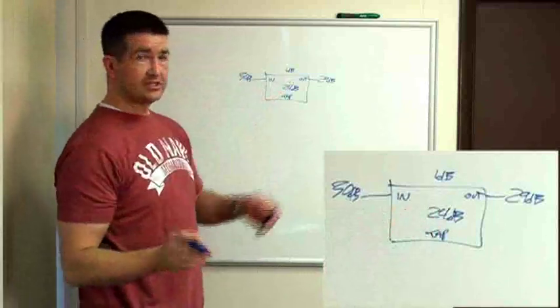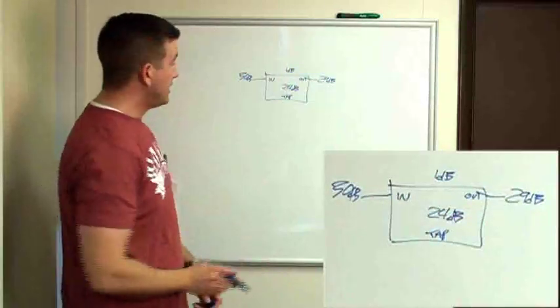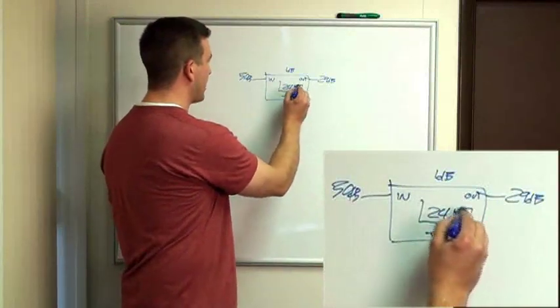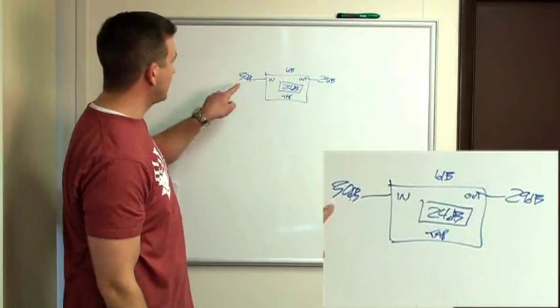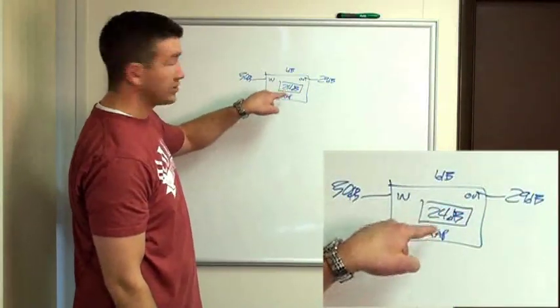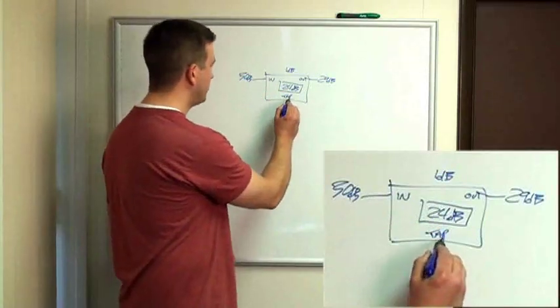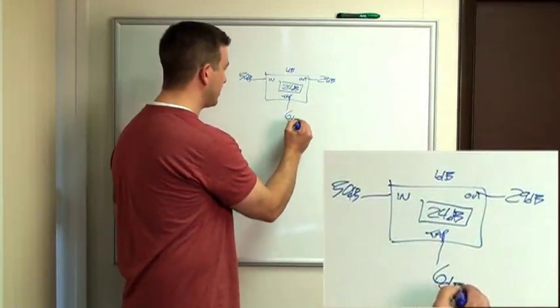Simple addition and subtraction, 30 minus 1 is 29 dB. Now, to calculate the loss on our tap port, we're going to subtract 24 from 30, which means our tap port is going to be 6 dB.